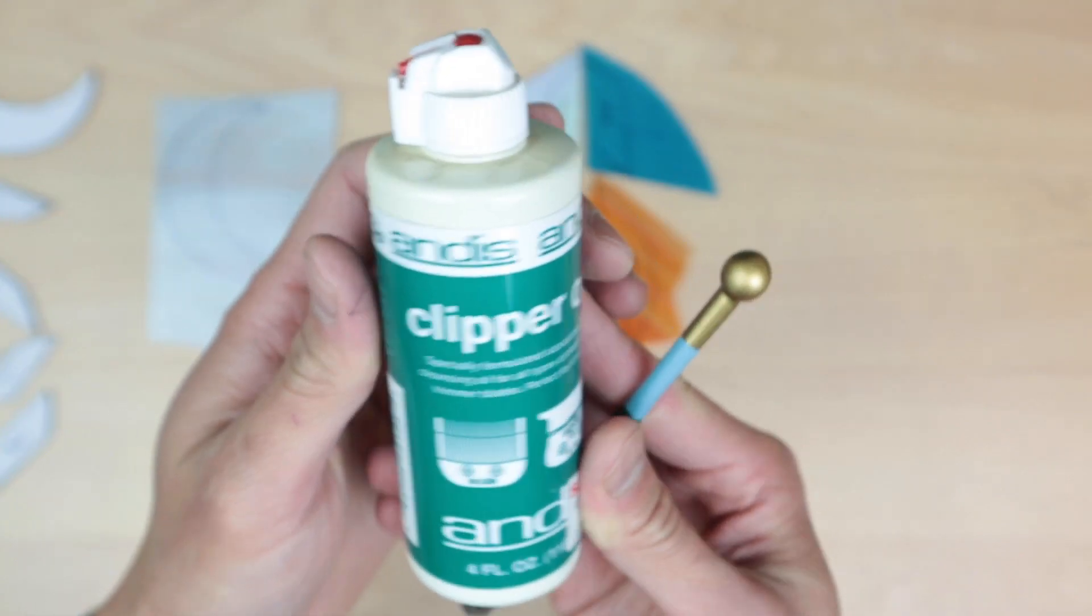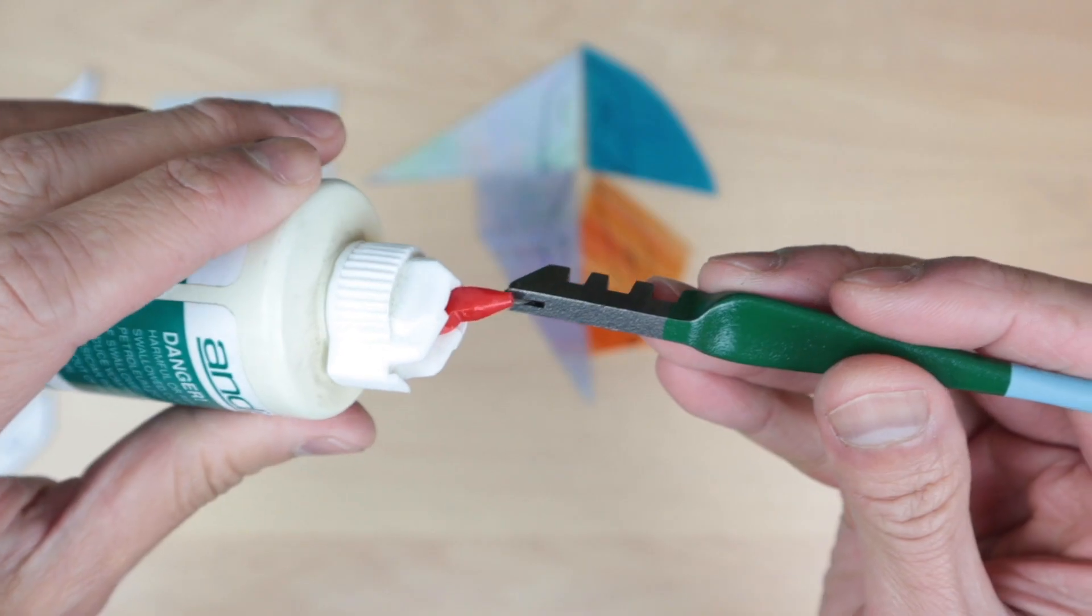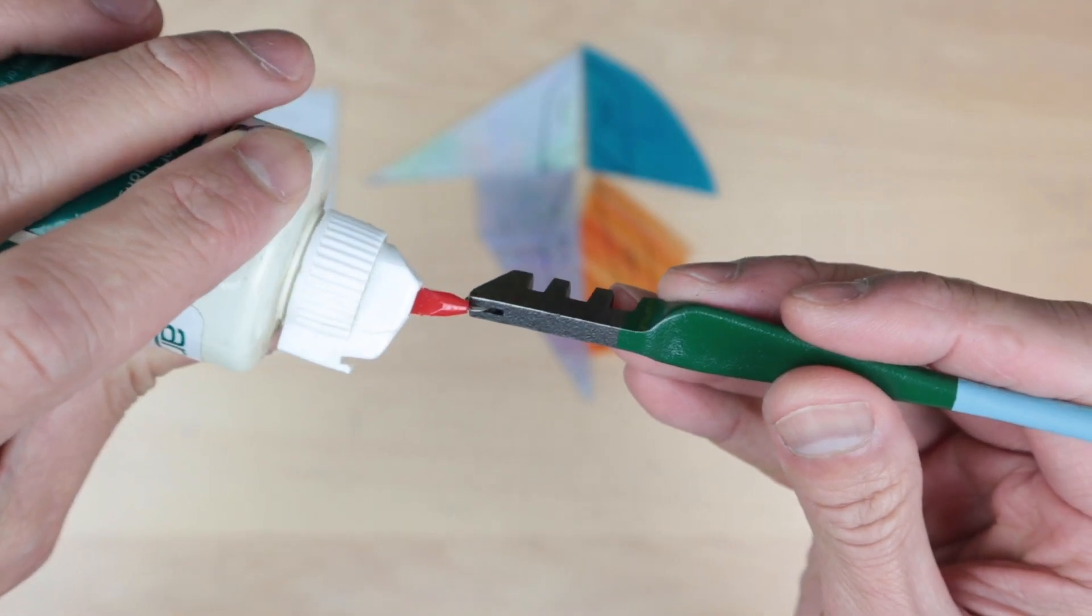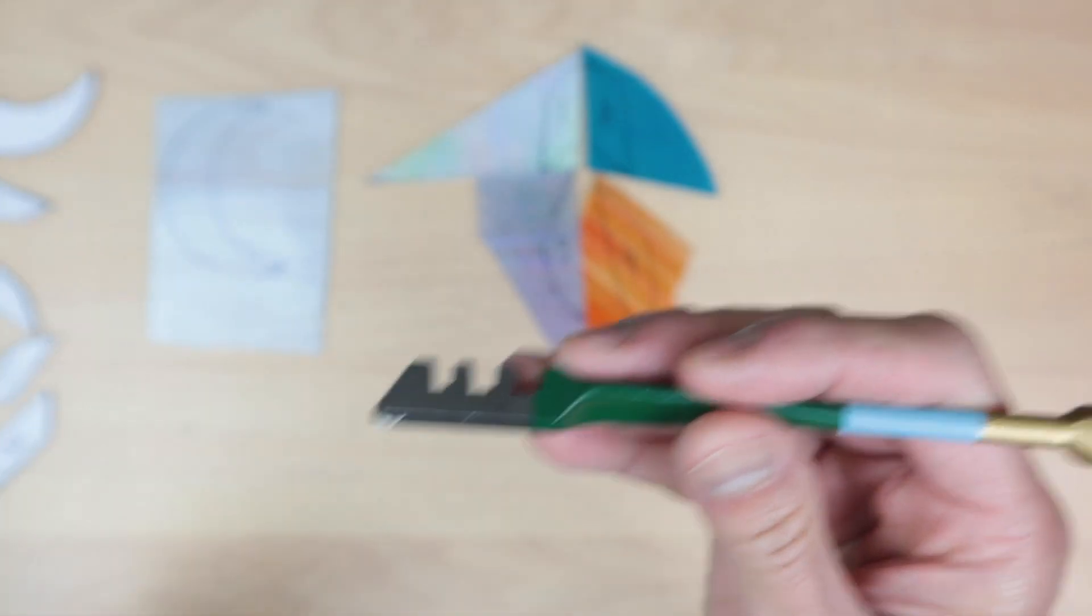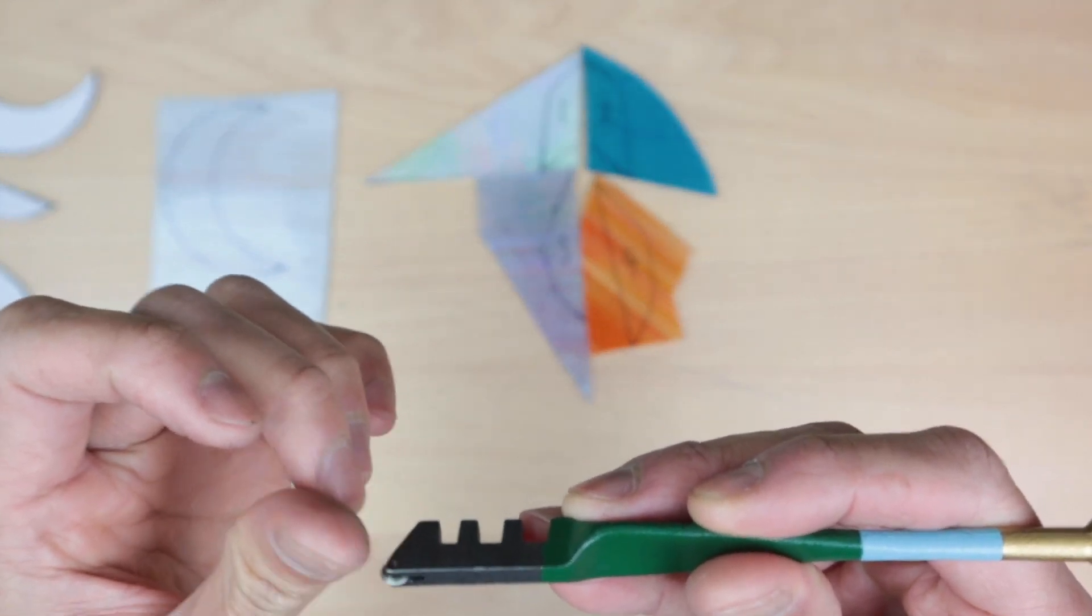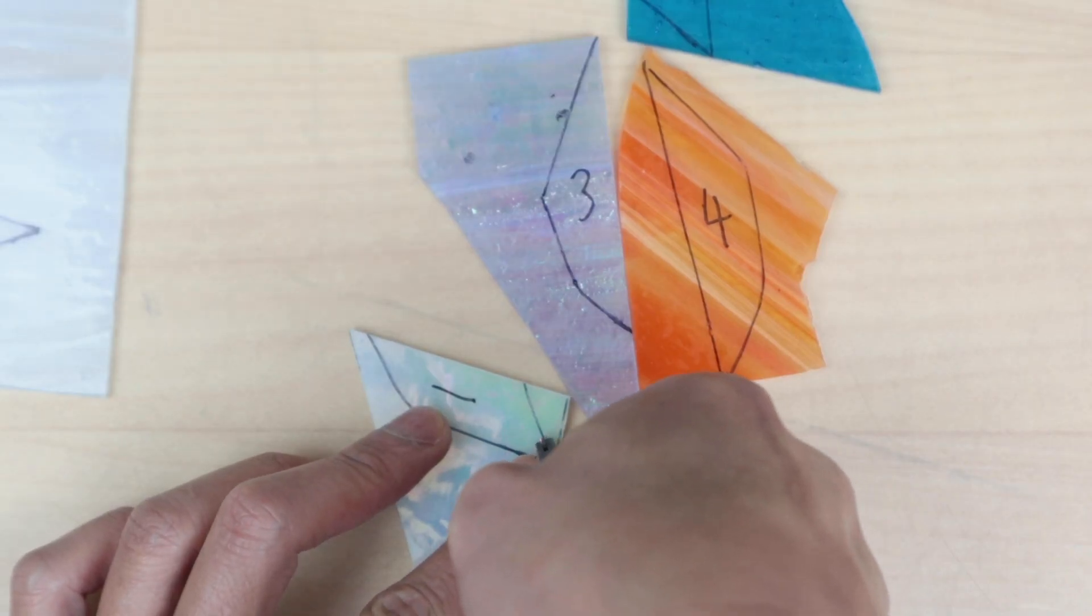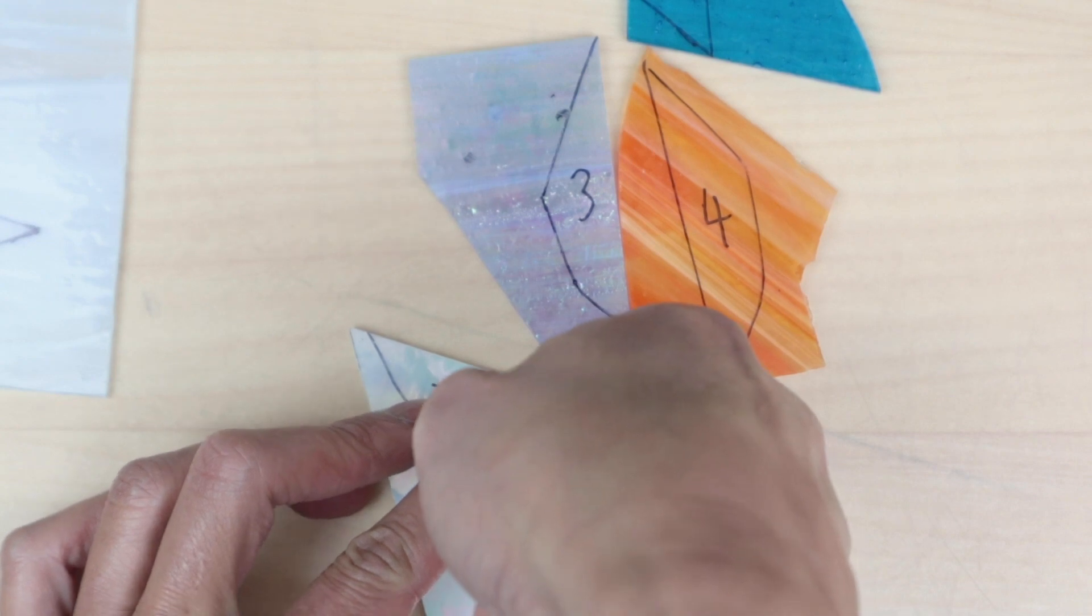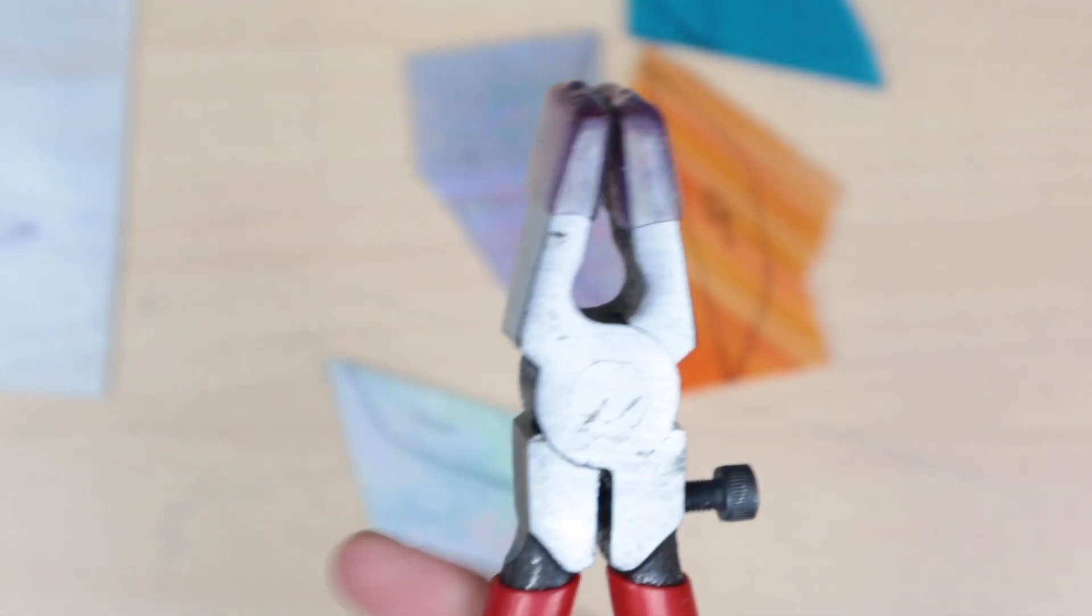I'm adding some cutting oil to the blade to keep it lubricated and just a tiny drop should do, too much becomes a mess. Kerosene works great too and it's also a cheaper option but you can pretty much use any cutting oil. Take the wheel and trace the line on the glass applying some pressure to create a score line on the surface of the glass.